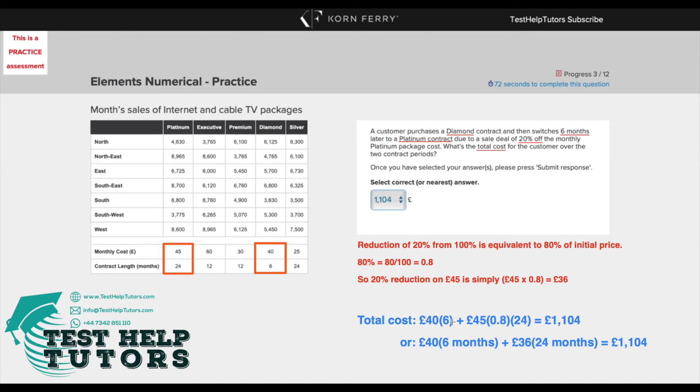So £40 times six months plus £45 times 20% off times 24 and that would give us £1,104.